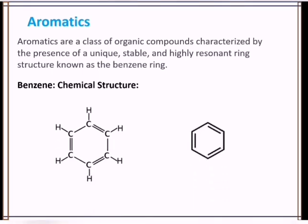Now let's look at benzene. Benzene is often referred to as the parent aromatic compound, consisting of a hexagonal ring formed by six carbon atoms, each bonded to one hydrogen atom.